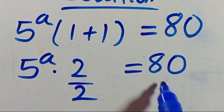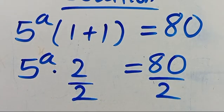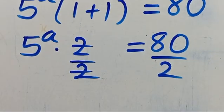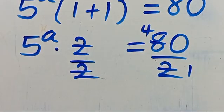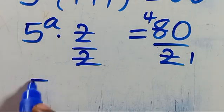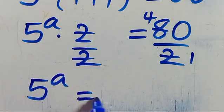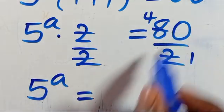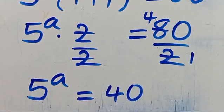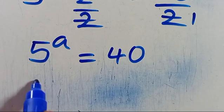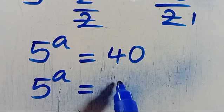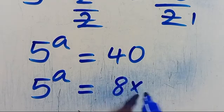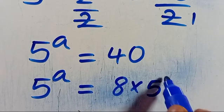So dividing both sides by 2 — this 2 will cancel out this 2 — so we have 5 to the power of A equals 40.